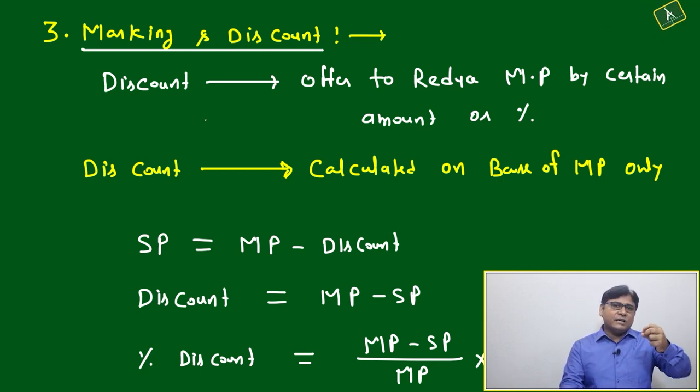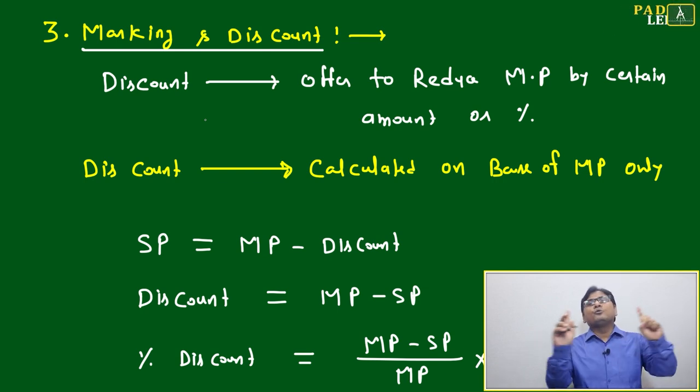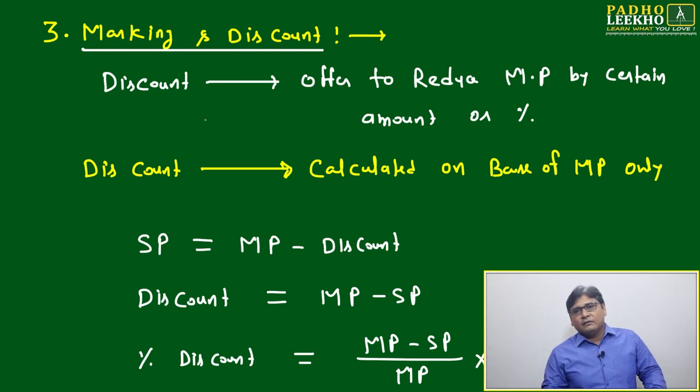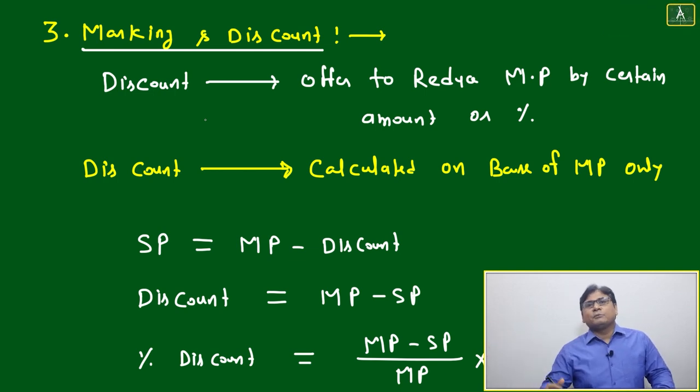Then you will think, okay, this price is creating little hurdles. We have to reduce the price a little. Then what you will do? You will provide some discount and you will put one board saying 20% off on this particular shirt or particular item, whatever you want to sell. Then based on the discount, your marked price will come down and your actual selling price will be decided.